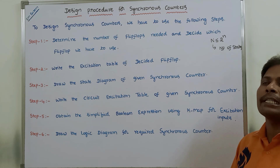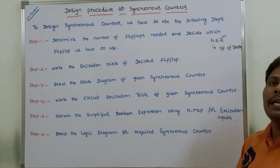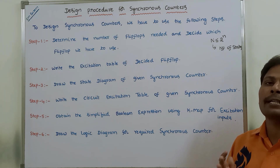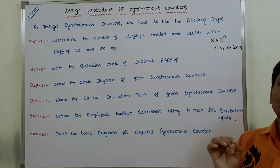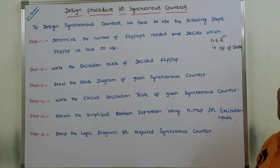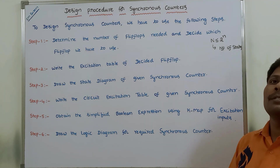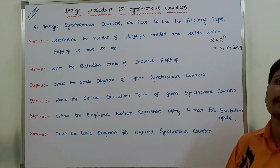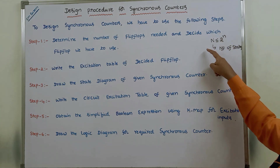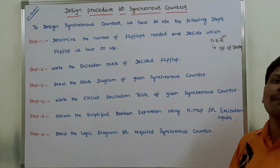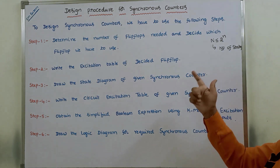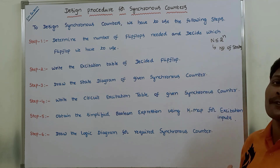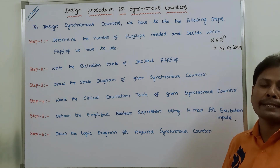For example, take a BCD synchronous counter. In the BCD synchronous counter, there are a total of 10 states, so capital N equals 10. Suppose we are designing a mod-7 counter — it contains 7 states, so capital N equals 7. Based on the number of states, we determine how many flip-flops are required to design the given synchronous counter.